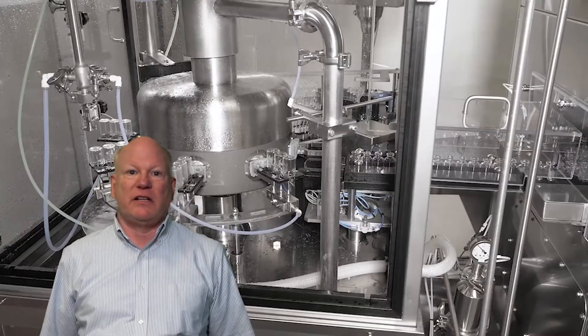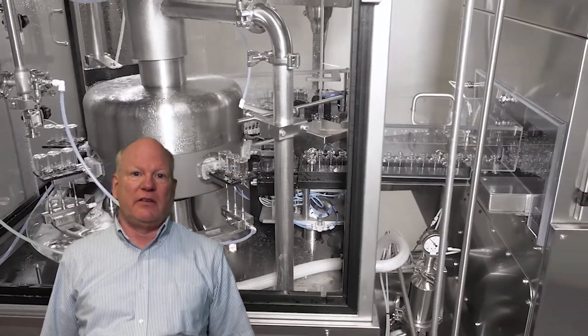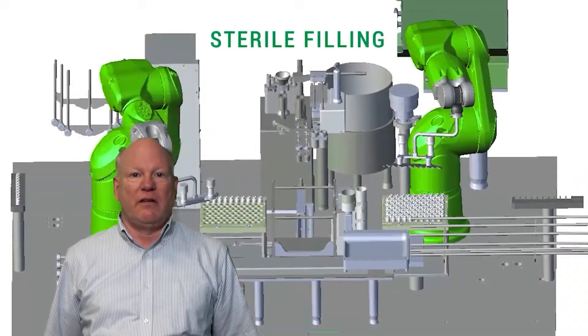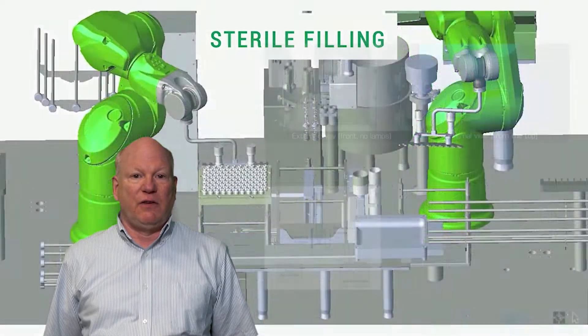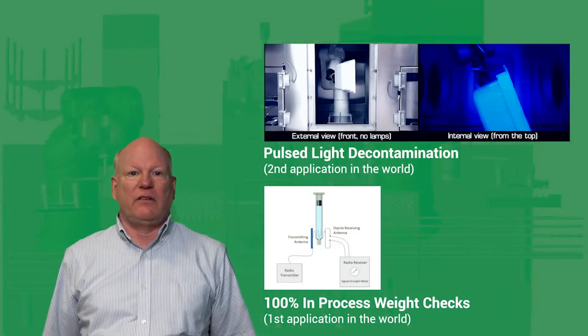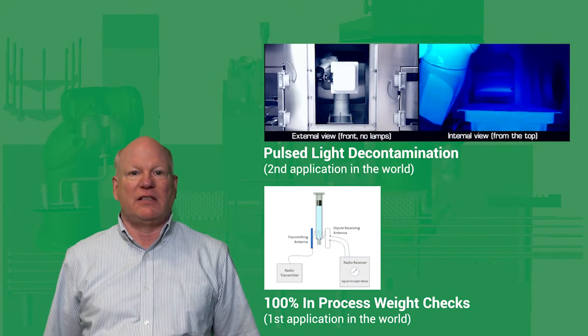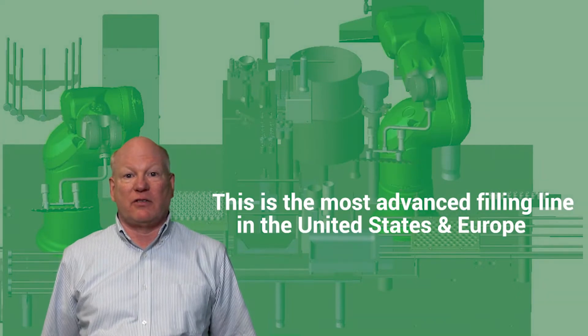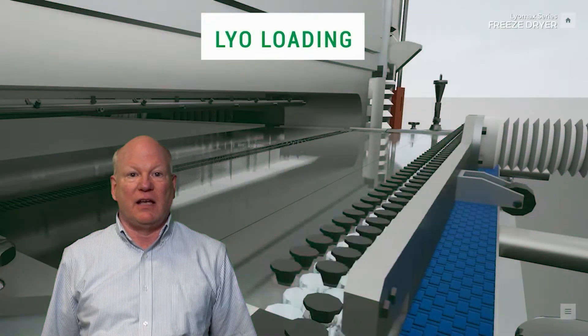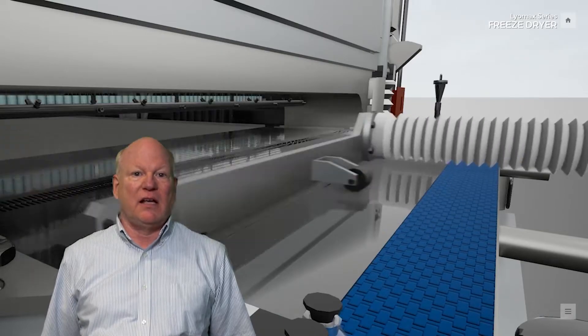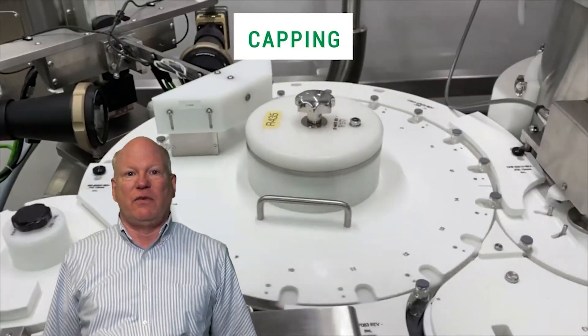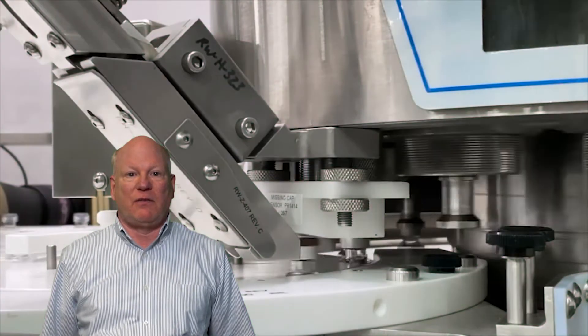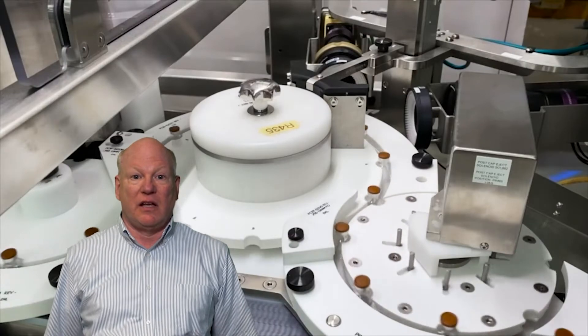This line uses VHP to sterilize the equipment, just like the other two filling lines you saw. This line is entirely isolator-based to protect the sterility of the medicine we fill, and it features two brand-new technologies, one of the first in the world, and another is the second application in the world. This is the most advanced filling line for small-scale drug manufacturing in the United States and Europe today, and we've worked with five companies to design, construct, and test this over the past three years. It cost approximately $10 million to construct this line, and we begin manufacturing injectable medicines in August of this year.